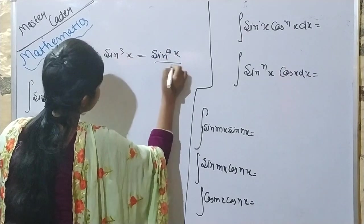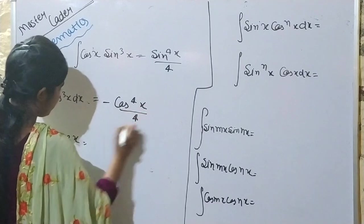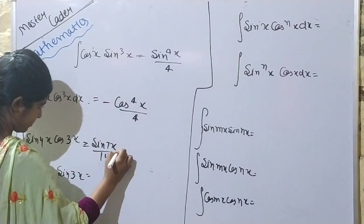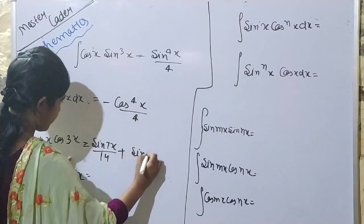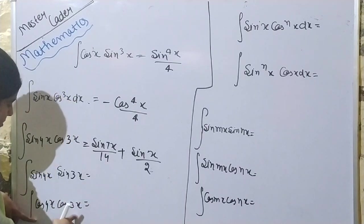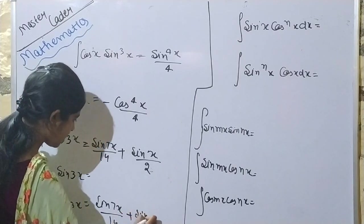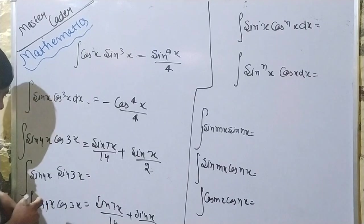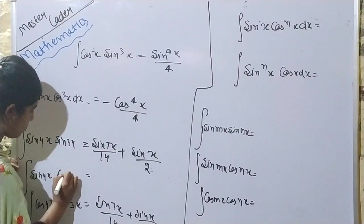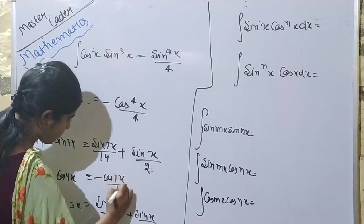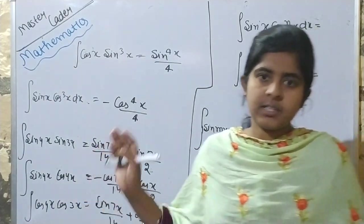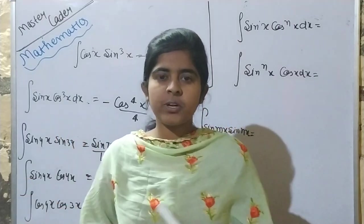This is minus cos raised to power 4x upon 4, and this is sine 7x upon 14, plus sine. This answer is the same. Here I have a little mistake — here is sine 3x, here is cos 4x. Now cos 7x upon 14 minus cos x upon 2. So I solved 1, 2, 3, 4, 5 sums in just a minute.